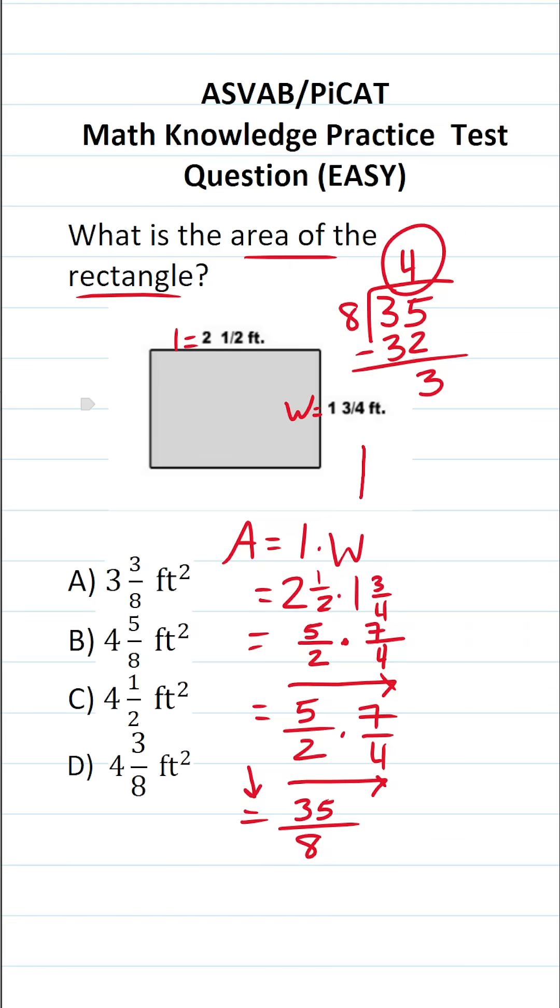This 4 is our whole number. This remainder of 3 is our numerator, and this 8 is our denominator. So 35/8 is the same thing as 4 3/8.